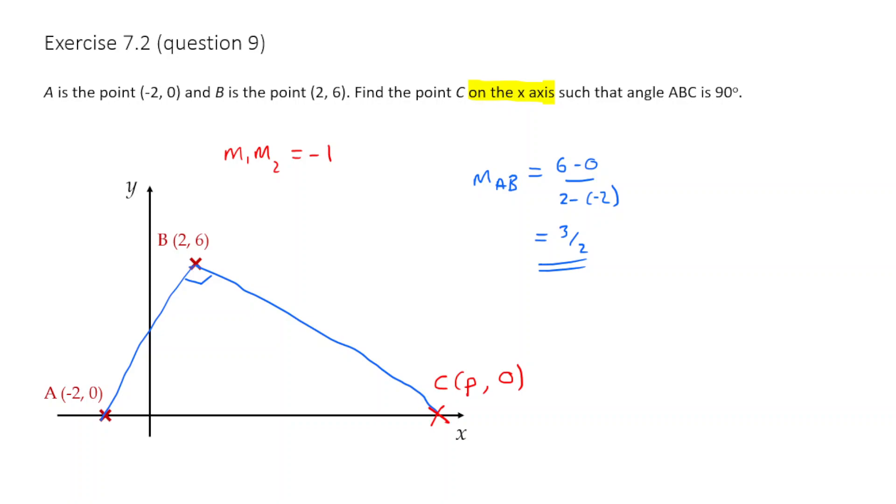Well, now what we've got to do is we've got to find the gradient of BC. So the gradient of BC, what's that going to be equal to? Again, it's going to be y2 minus y1, so 0 minus 6, divided by x2 minus x1, which is p minus 2. So in the end, what we get there is minus 6 over p minus 2.